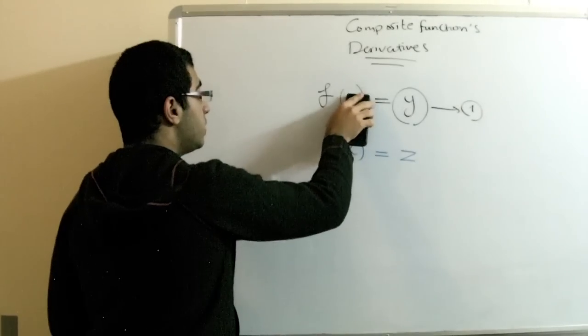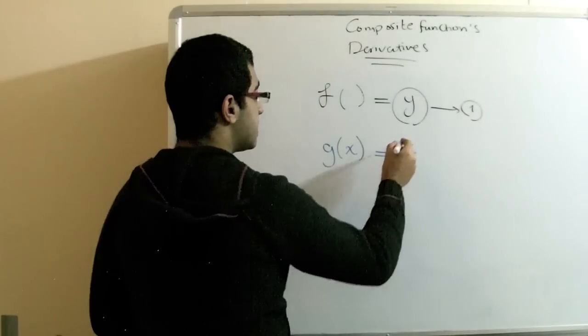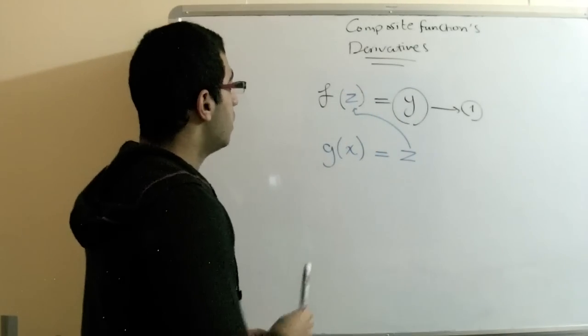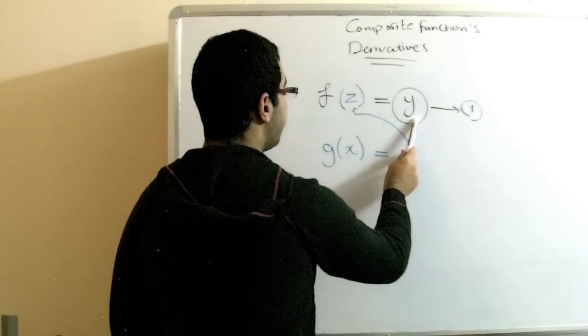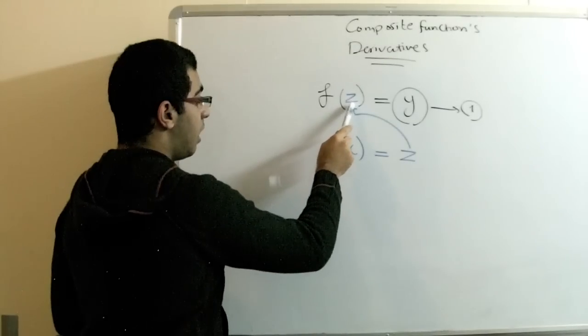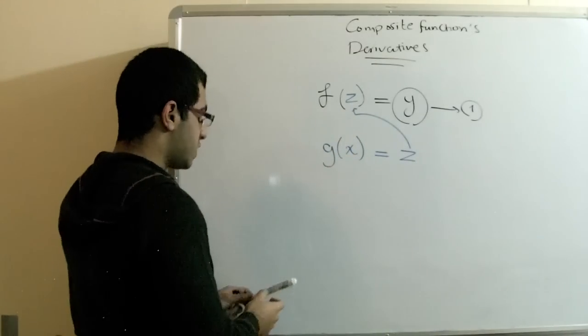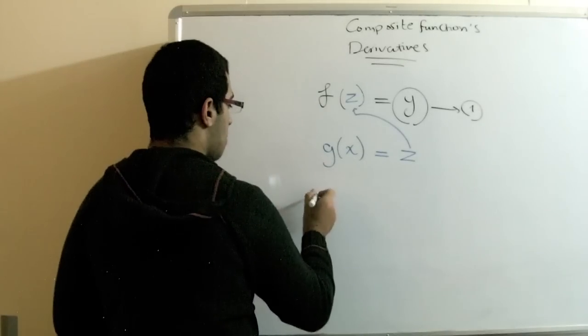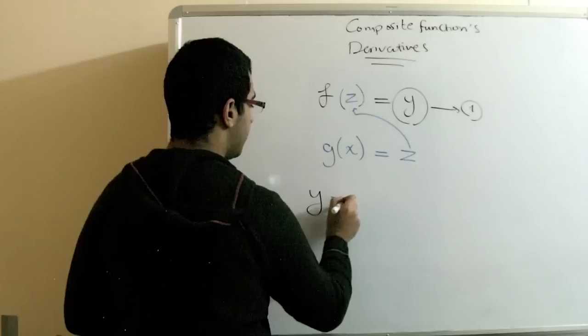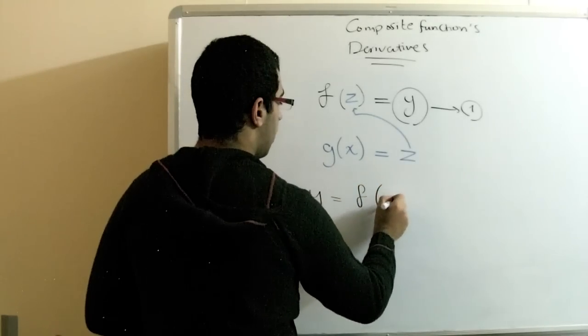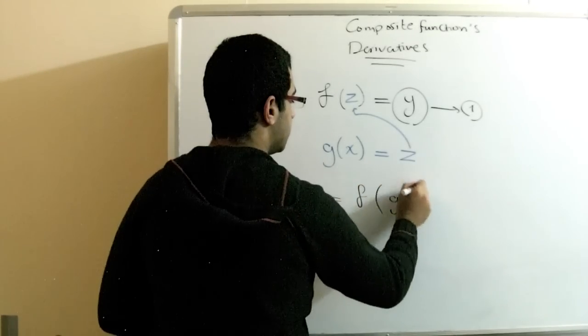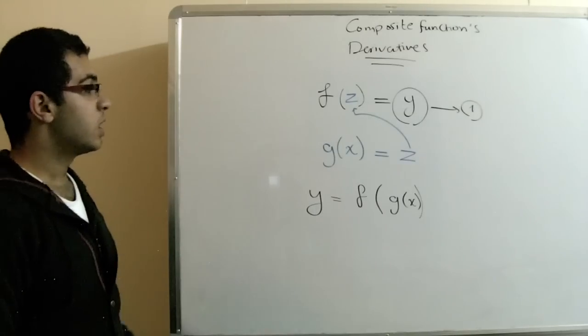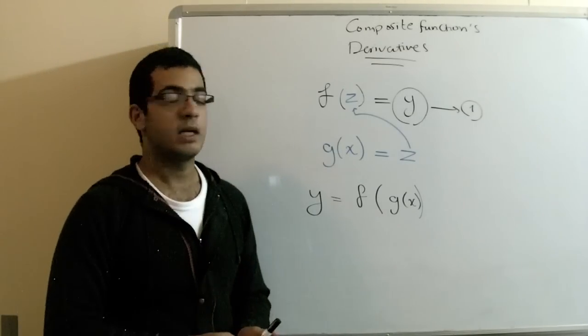What we will do here is put the z here inside the brackets of the function. So the function of y is the function of the function of z. We can write it this way: y equals f of g(x). This is what I mean by a composite function.